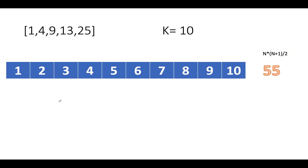Hypothetically, if there is no input array and k is 10, we would simply add all elements from 1 up to 10. The sum can be calculated using the formula n*(n+1)/2, which comes out to be 55. This tells us we have added all elements 1 through 10.